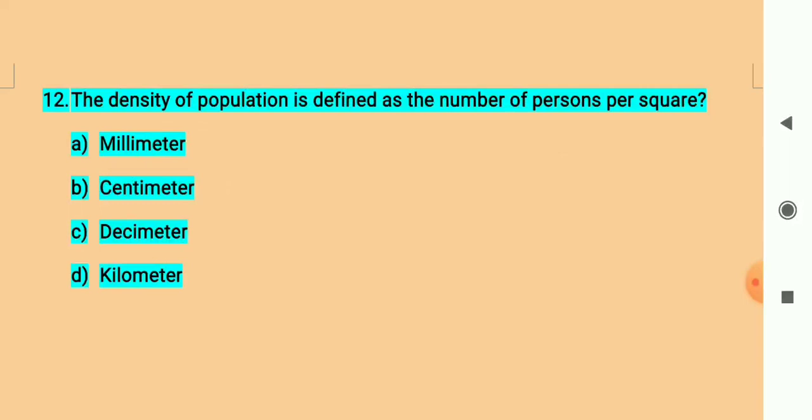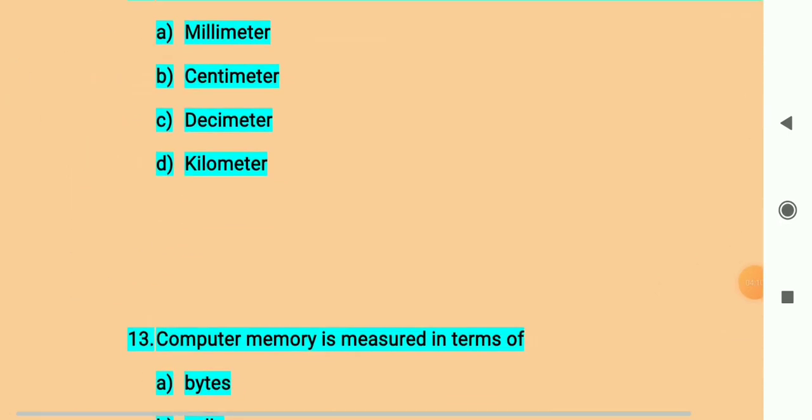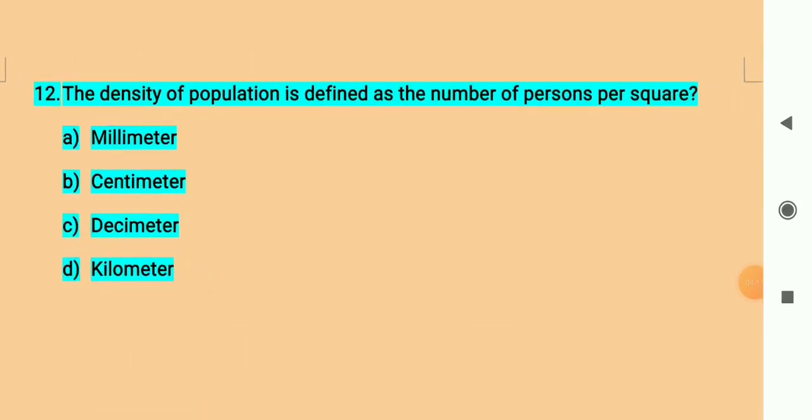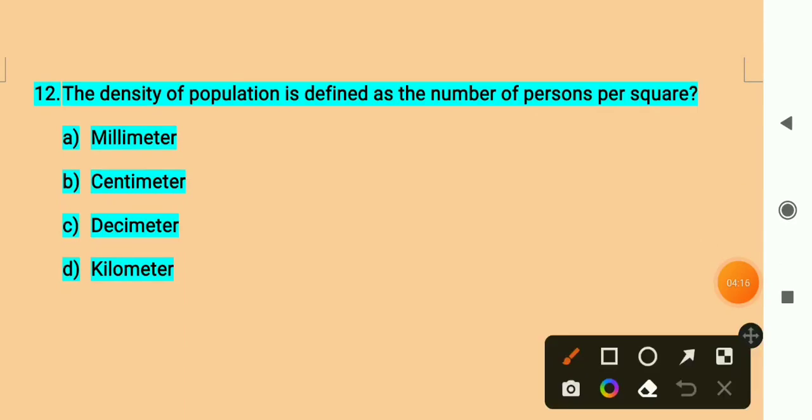Question number twelve. The density of population is defined as the number of persons per square - per square what? Millimeter? Centimeter? Decimeter? Kilometer? Meter? What is it? Density is the number of persons per square kilometer. Option D is the right answer.